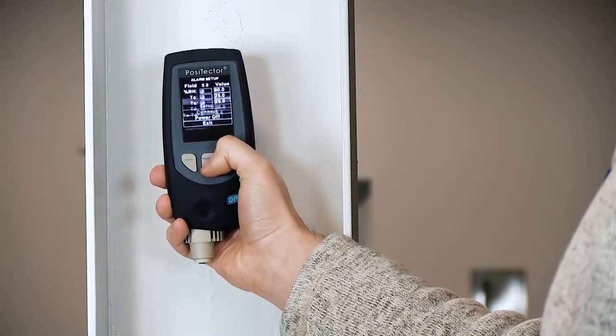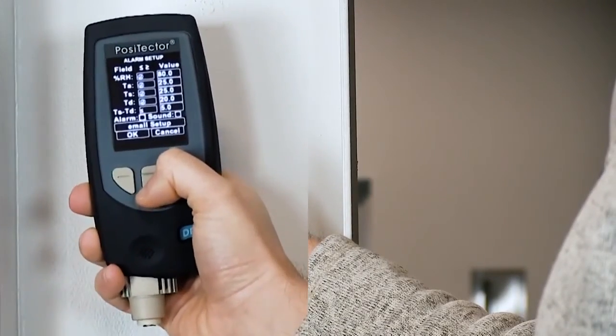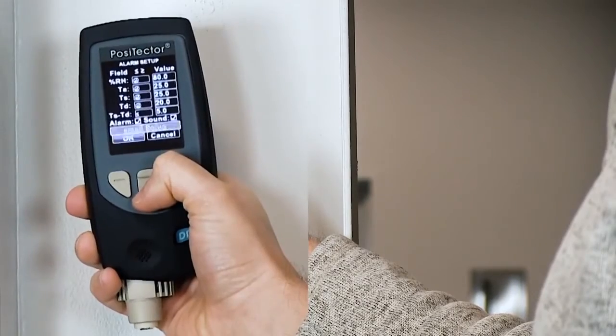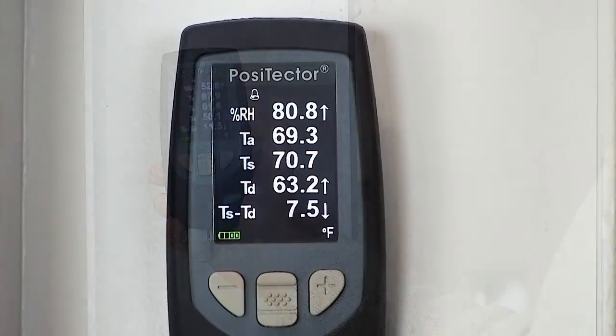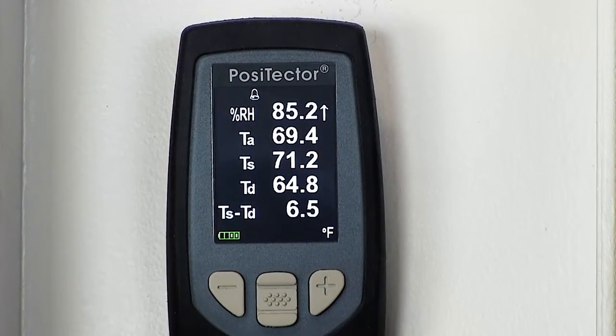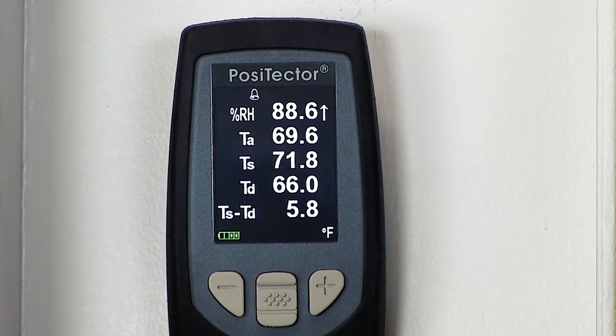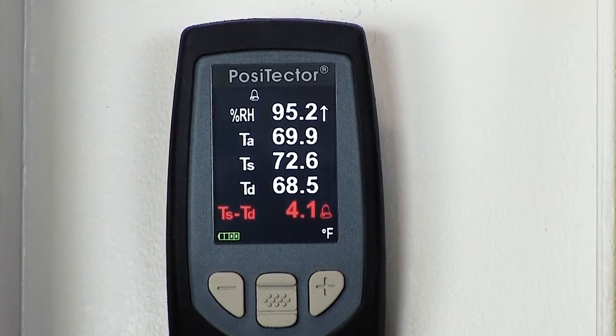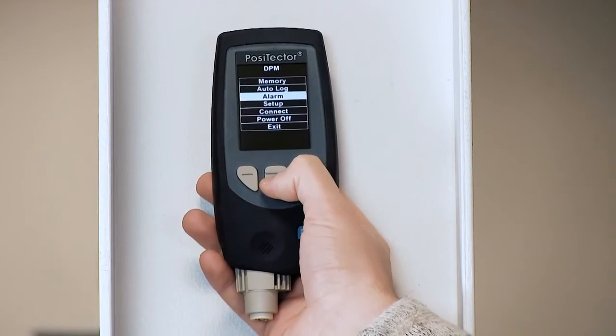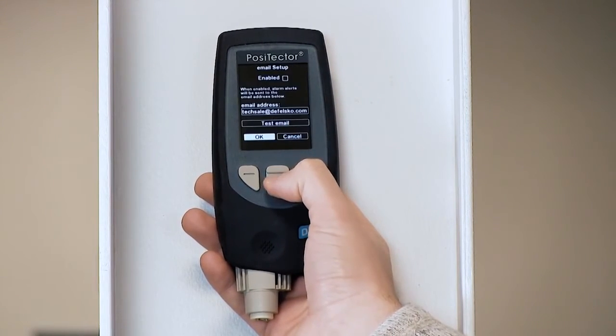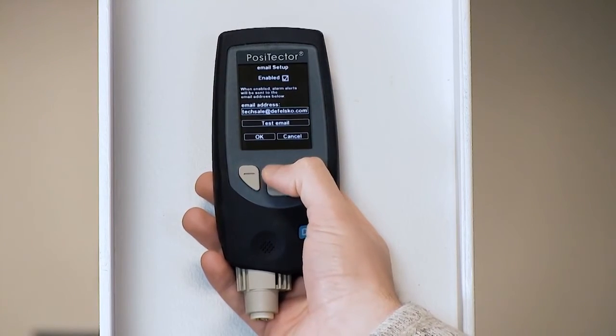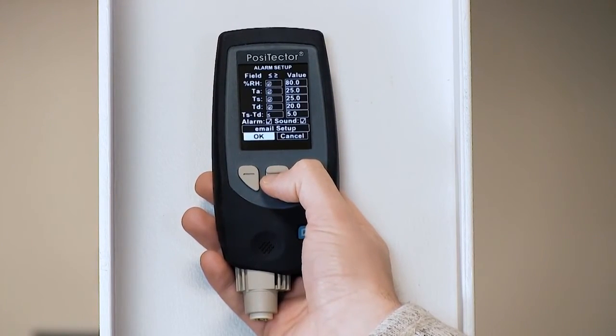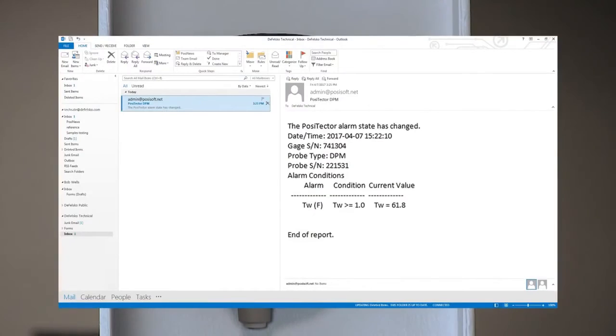All Positector DPM models also feature alarm capability. When the alarm is enabled on standard models, visible and audible warnings sound when the surface temperature is within 3 degrees Celsius or 5 degrees Fahrenheit of the dew point as per international standards. On advanced models, custom alarm limits can be set for each parameter. When a limit is exceeded, receive email alerts when connected to Wi-Fi in addition to the audible and visible alerts on the gauge.